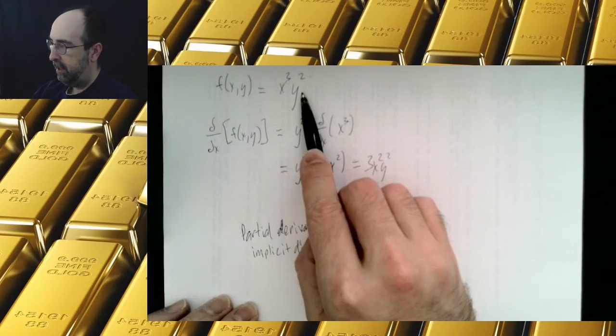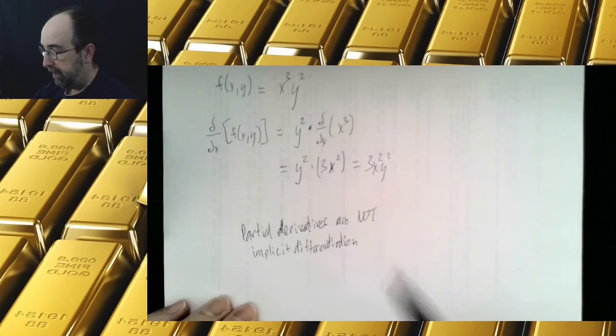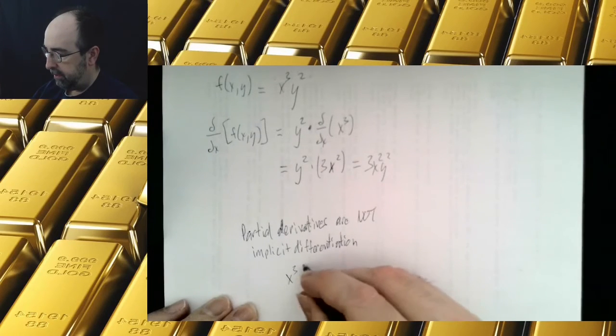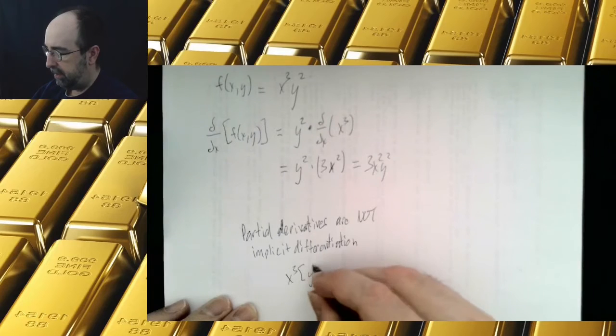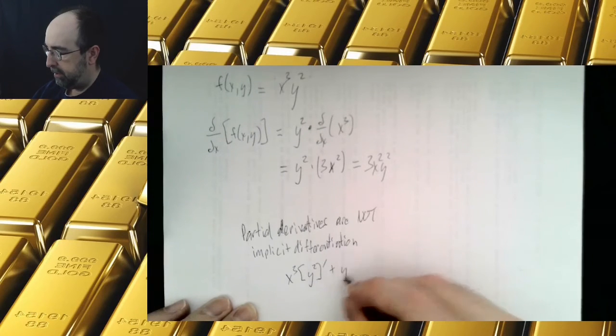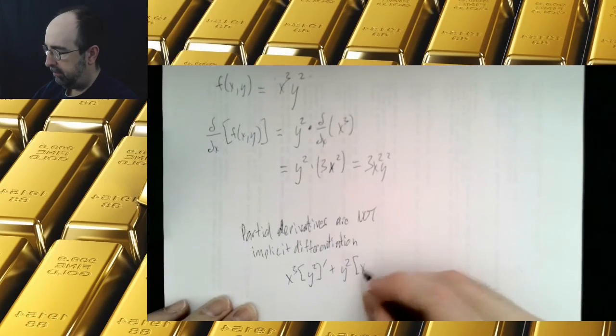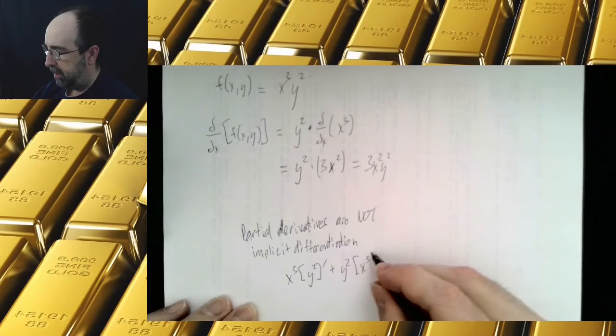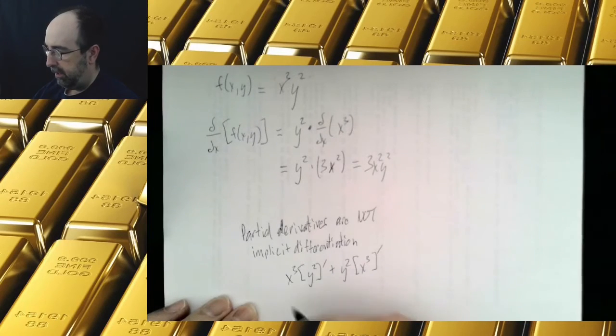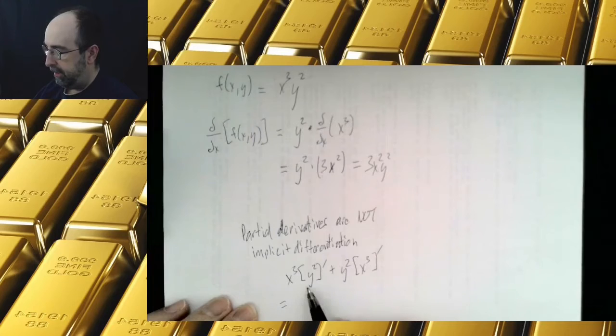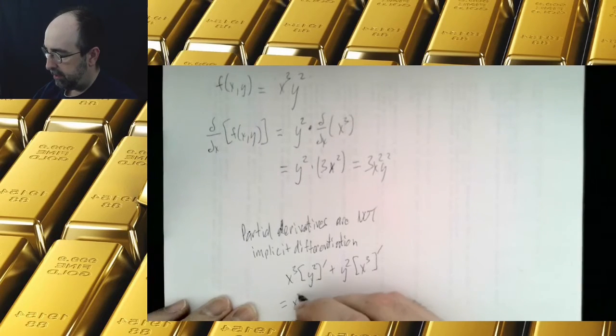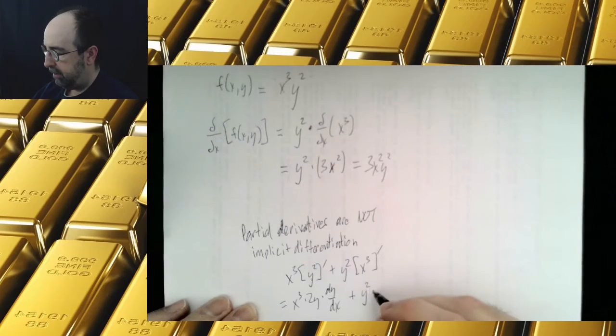They'll do first times the derivative of the second plus the second times the derivative of the first, and what they'll get is x cubed times 2y times dy/dx here, so they'll get x cubed times 2y times dy/dx plus y squared times 3x squared.